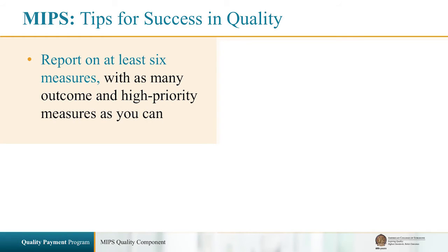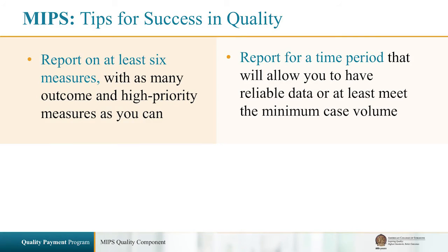In conclusion, here are some tips to help you be successful in MIPS. Report on at least six measures and report as many outcome and high-priority measures as you can in order to earn bonus points. Note that if you report more than six measures, CMS will apply the top performing measures to your score. Report for a time period that will result in reliable data or at least meet a 20 patient case minimum.